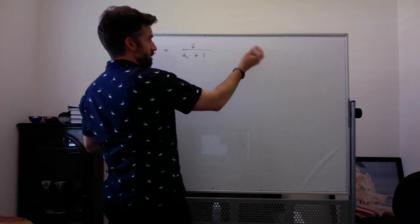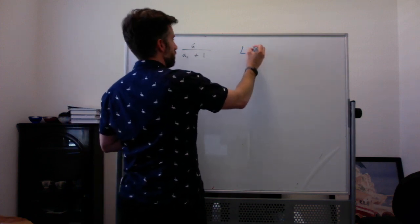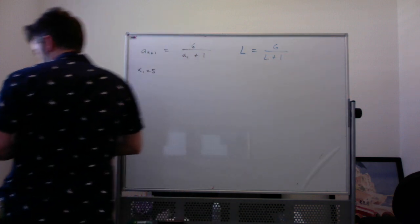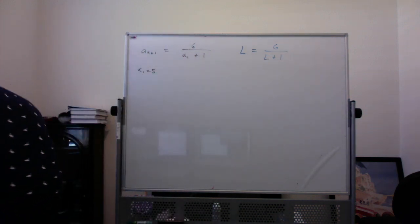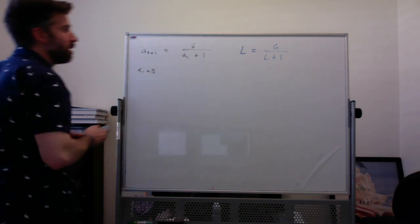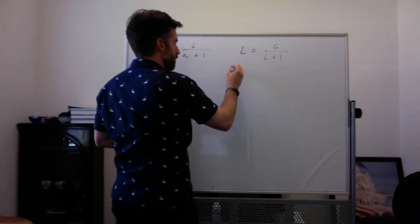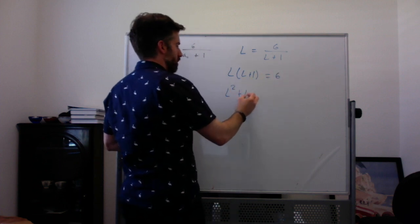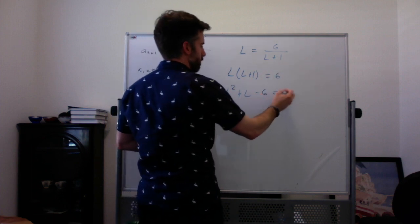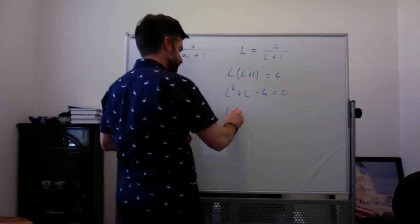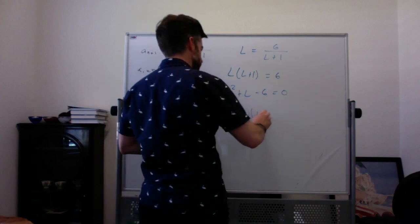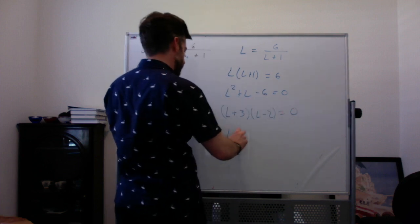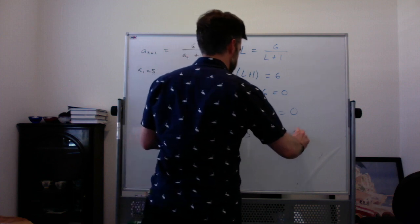So here I'm going to do the same sort of thing. I'm going to replace my A sub n's with the limit L. So I'm going to multiply this by L plus 1. I'm going to multiply this out. Subtract the 6. This is a quadratic that factors. So L is going to equal either negative 3 or positive 2.